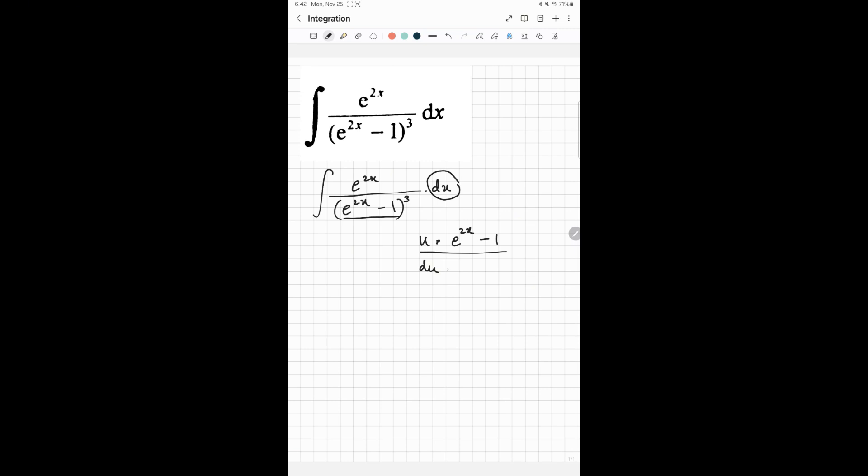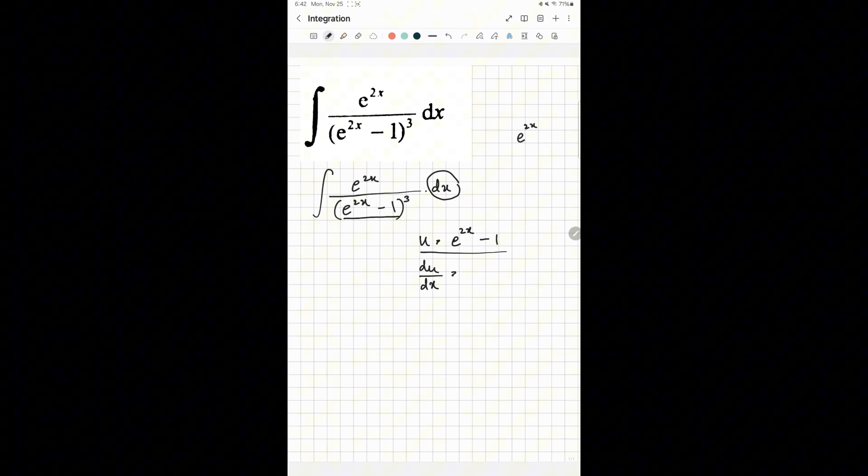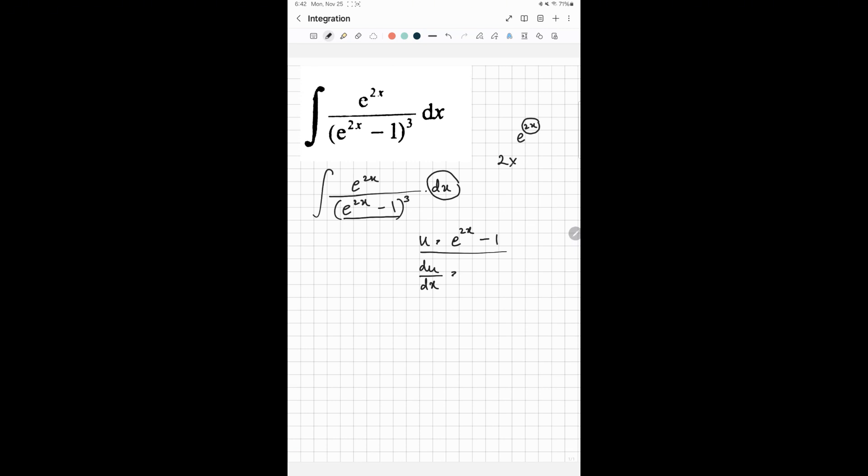So you write du/dx equals... And when you differentiate e^(2x), it's the differentiation of the power. So 2 times the same thing, which is 2e^(2x). The differentiation of 1 is 0. So you end up with du/dx equals 2e^(2x).